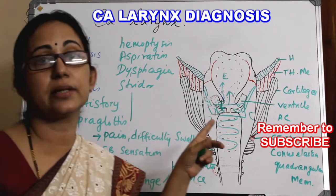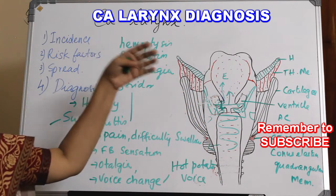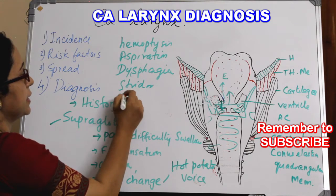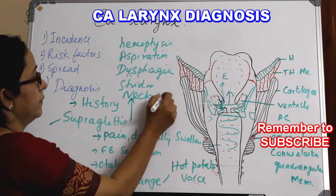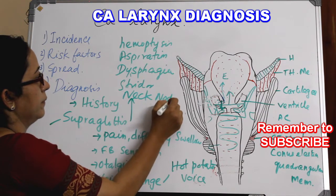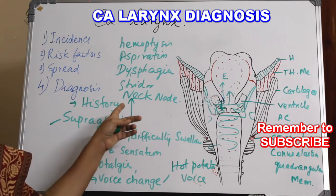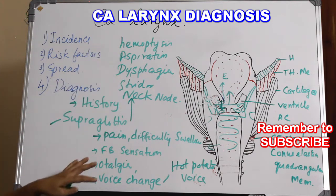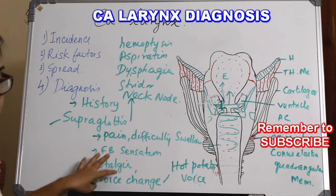The lymphatic supply of the supraglottis is very abundant, so supraglottic CA can also present as neck node enlargement. Sometimes the patient presents only with a neck node and no other complaints. All of these should be investigated in detail. These are the earlier features of supraglottic CA, and in late stages all of the above will be present.